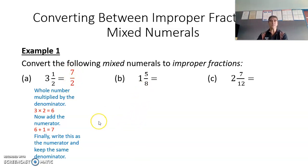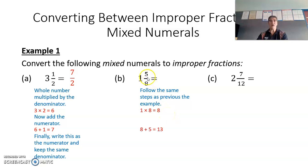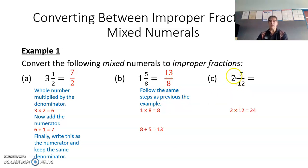With the second example, one and five eighths — follow the same process. Take the whole number and multiply it by eight: one times eight is eight. Now add the five, the numerator: eight plus five is 13. Write that as the numerator, and the denominator stays the same — so 13 over 8. In the final example, multiply the whole number by the denominator: two times twelve is 24. Add the numerator to get 31. So 31 becomes the numerator and the denominator stays the same.